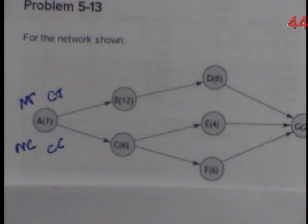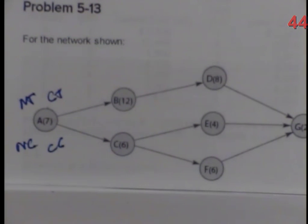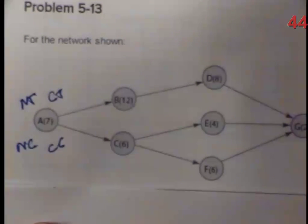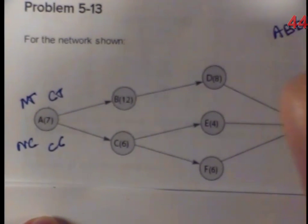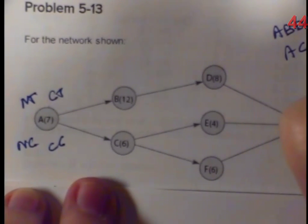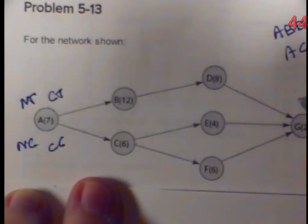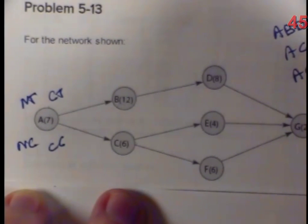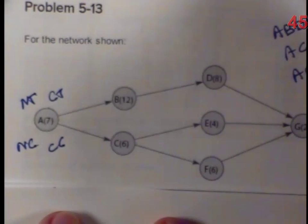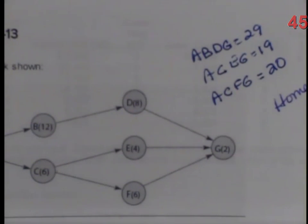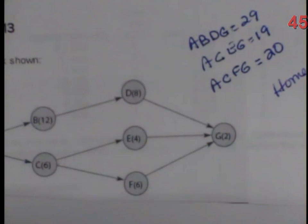We've got to determine the critical path. In this diagram we clearly have path A-B-D-G, path A-C-E-G, and path A-C-F-G. A-B-D-G: 7 + 12 + 8 + 2 = 29 weeks. A-C-E-G: 7 + 6 + 4 + 2 = 19 weeks. A-C-F-G: 7 + 6 + 6 + 2 = 21 weeks. Wait — A-C-F-G: 7 + 6 + 6 + 2 = 21 weeks, and A-C-E-G is 19. So the critical path is A-B-D-G at 29 weeks.